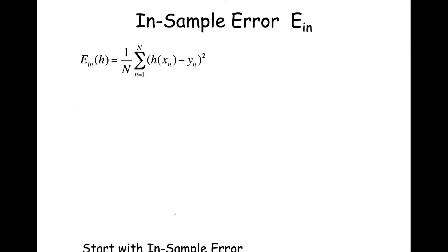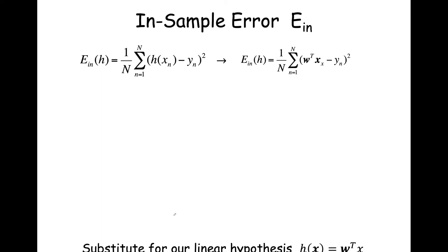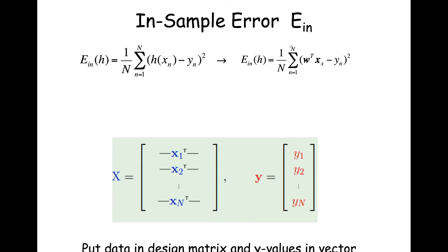Let's look at linear regression. We start with our expression for in-sample error. We substitute for h(x) its definition — that score, that weighted sum — which we said is w^T x, where our w vector is augmented with w_0 and our x vector is augmented with x_0. There's a typo there that should be x_n. So we substitute w^T x: that's w_0 times x_0, w_1 times x_1, up to and including w_d times x_d. We then compute this in-sample error using matrices, constructing what statisticians call a design matrix.